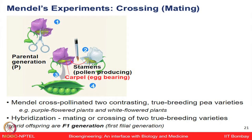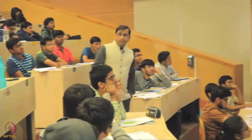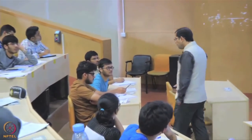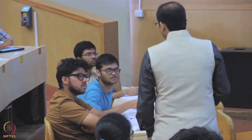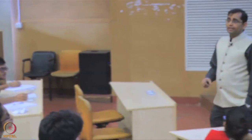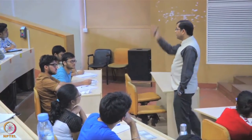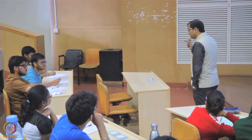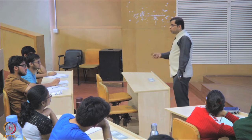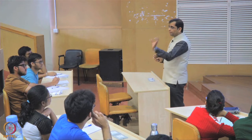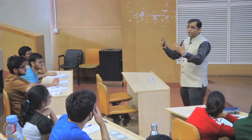For his experiments, Mendel ensured crosses were done under controlled conditions with no unintended cross-pollination. He cross-pollinated only two contrasting, true breeding pea varieties — purple versus white, long versus short, yellow versus green, etc. He was studying whether the trait observed was dominant or recessive, ensuring he only studied homozygous characteristics. Capital P, capital P versus small p, small p gives a controlled experiment.